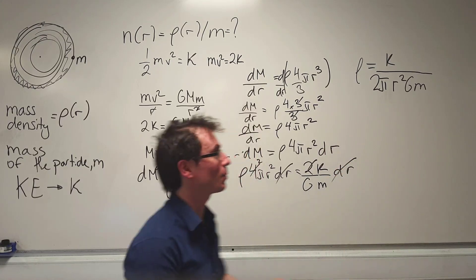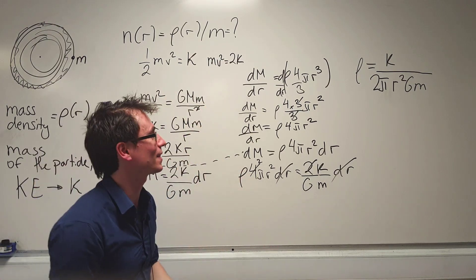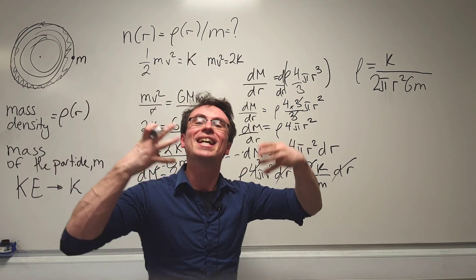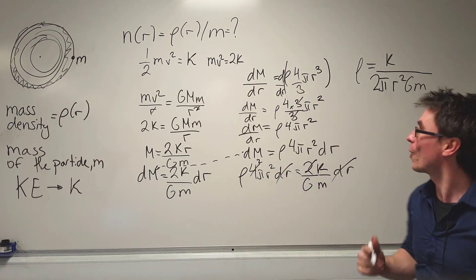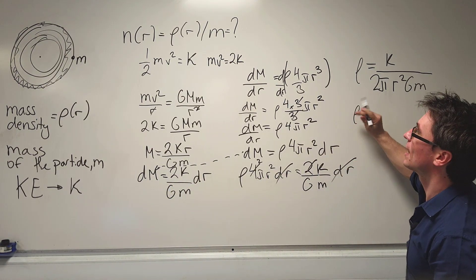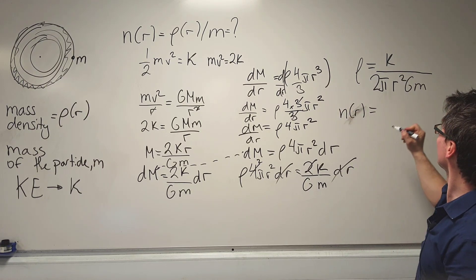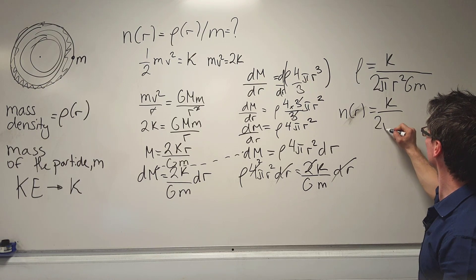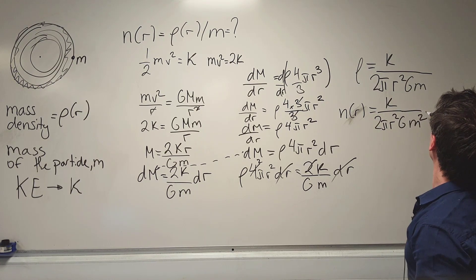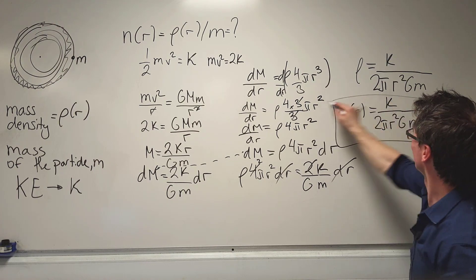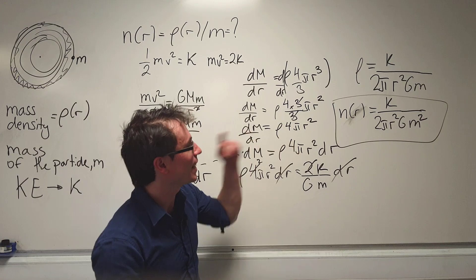What we're looking for in this question, remember, is the density divided by the mass of a single particle, so we need to divide yet again by m, and what we are going to get is that the number density r is actually equal to k over 2 pi r squared g m squared, and therefore, the correct answer is a.